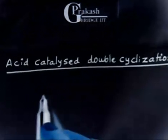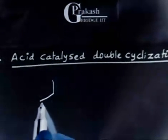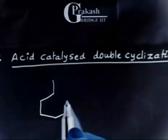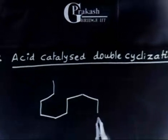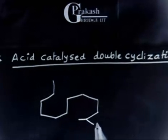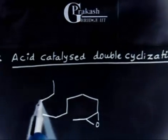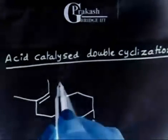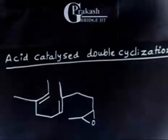Let me write the reactant. We have this 6-membered ring, and on this side again a 6-membered ring. Here I have oxygen, and this is a CH3. At this position I also have a CH3, and there is a double bond. At this position I also have a CH3, and there is a double bond.